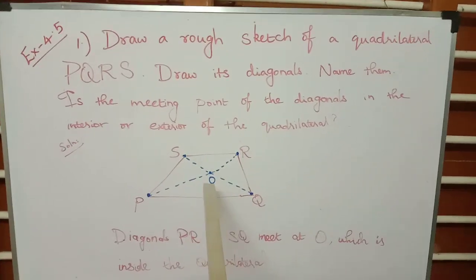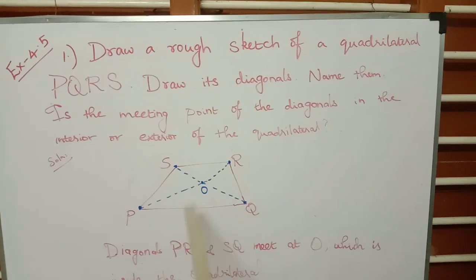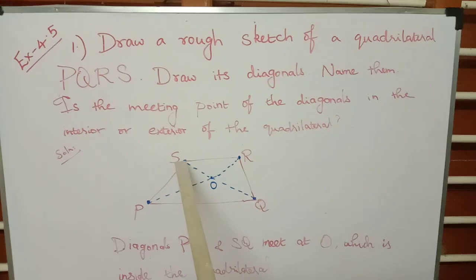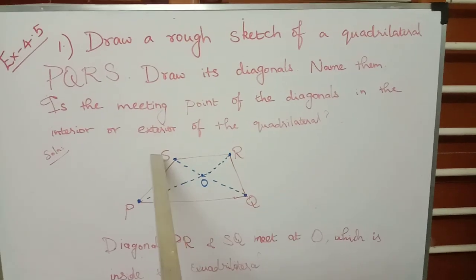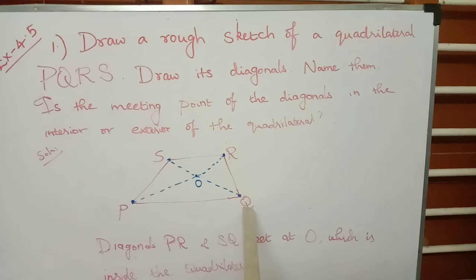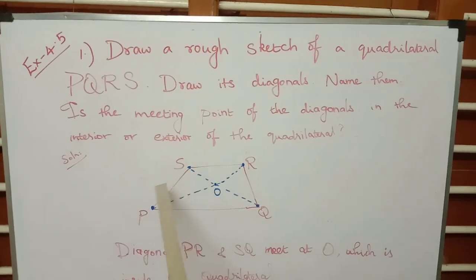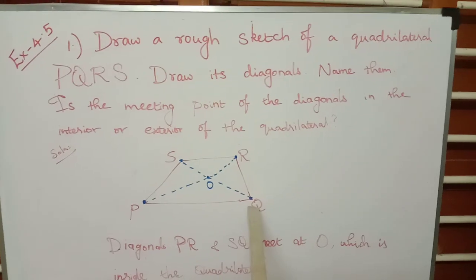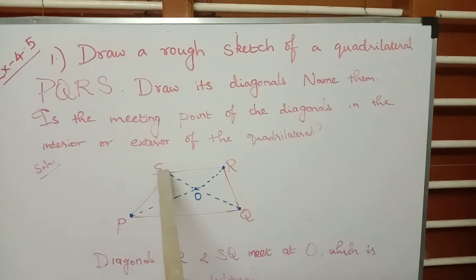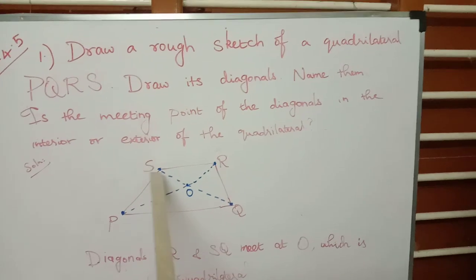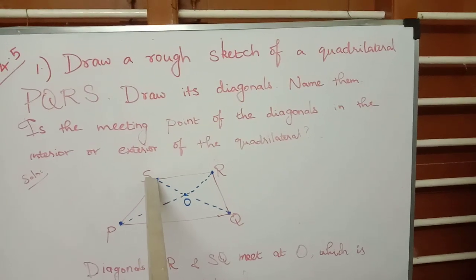There are two diagonals in this quadrilateral. What is meant by diagonals? Diagonals means it is a line which joins the non-adjacent vertices. So see this S and Q — I am joining these points S and Q with a line. S and Q are non-adjacent vertices. Adjacent vertices of S are P and R, but the non-adjacent vertex of S is only Q. So SQ is a diagonal.